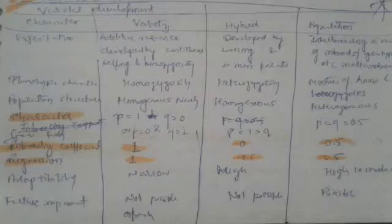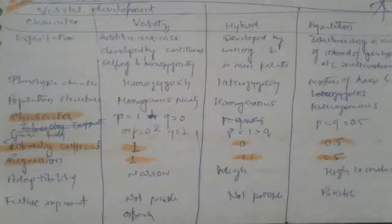Agar hum hybrid ki baat karein, toh hybrid kaise develop karte hain — by crossing two cultivars aur inbreds. Jab bhi hum cross pollinated crops ke baare mein baat karenge, toh as such the cultivar which we develop, we can't use it as variety unless we cross it. Lekin agar self pollinated crops ke baare mein baat karenge, toh jaise hi hum koi bhi line ko develop karenge, toh usko variety ke tarah use kar sakte hain, lekin jab tak hum hybrid nahi banaenge ya open pollination nahi karenge, tab tak hum usko cross pollinated crops mein use nahi kar sakte hain.